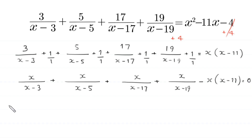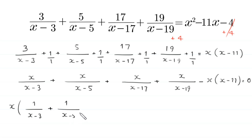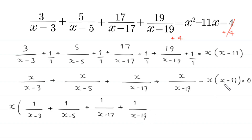Now, from all these terms we can factor out x, giving: 1 over (x minus 3) plus 1 over (x minus 5) plus 1 over (x minus 17) plus 1 over (x minus 19), and from this term negative x plus 11 is equal to 0.